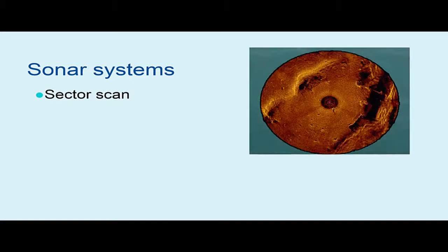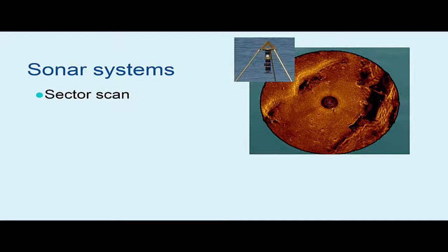Here's a sector scan image taken from a Kongsberg MS-1000 during a search at Lake Piru in Ventura County, California. The sector scan works by using a rotating sonar head mounted on a tripod that's deployed and sits on the bottom of a body of water, or is sometimes mounted on a remotely operated vehicle. In this image, you can see acoustic shadows — areas where sound waves don't reach. To light up the shadowed area, the tripod is repositioned and a new scan is taken from a new angle.